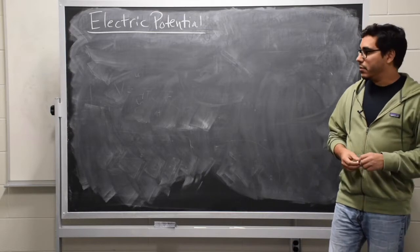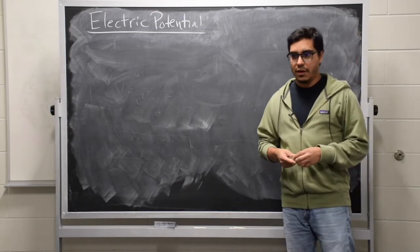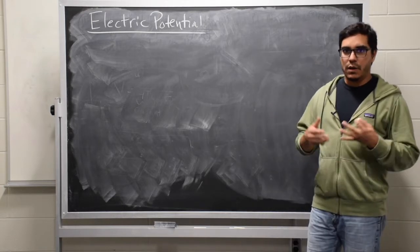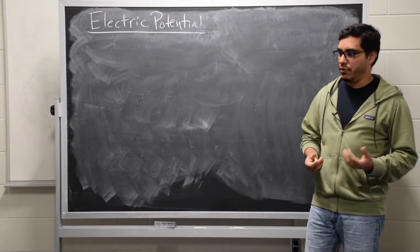In the previous videos, we talked about the electric field, which is a field that all charges produce. It's a vector field, so every point in space will have a number and a direction associated with the electric field when there are charges present.